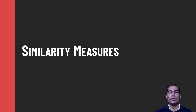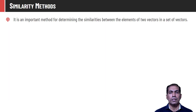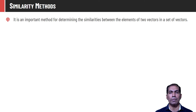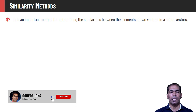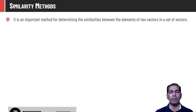Let us talk about a few similarity methods now. Similarity measures are typically used to find the similarity or the strength of similarity between given vectors, and are used in pattern recognition and machine learning where comparison of two vectors is quite important. There exist many methods, but in this course we will be talking about the two most important methods for finding similarities between fuzzy sets.